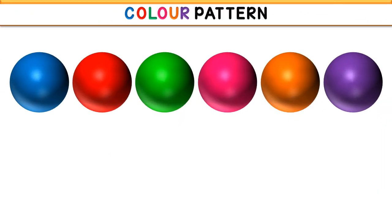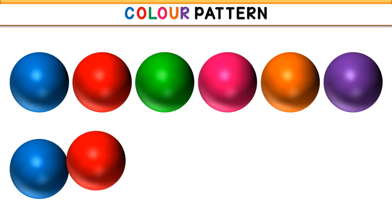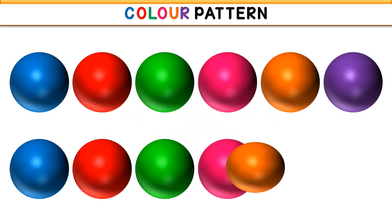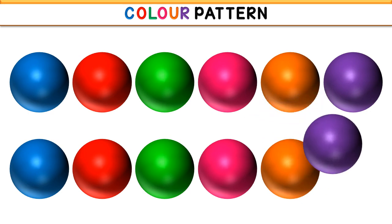Hello students, welcome back to Headmaster channel. Today we are going to learn the color pattern. First, we are going to observe the pattern of the colors. The first color is blue, then red, then green, then pink, then orange, and at the last, purple. Let's repeat this color pattern: blue, red, green, pink, orange, purple.